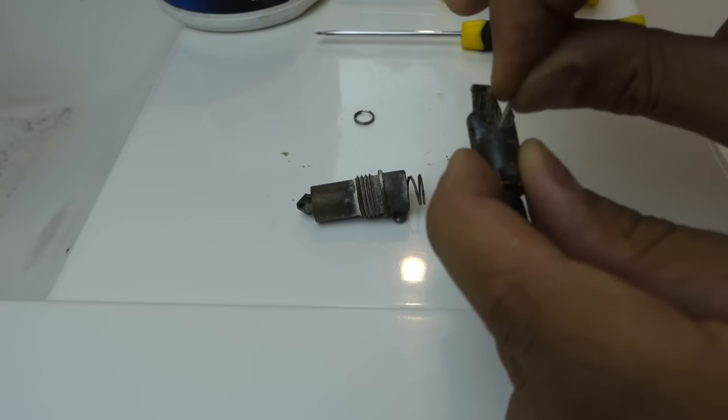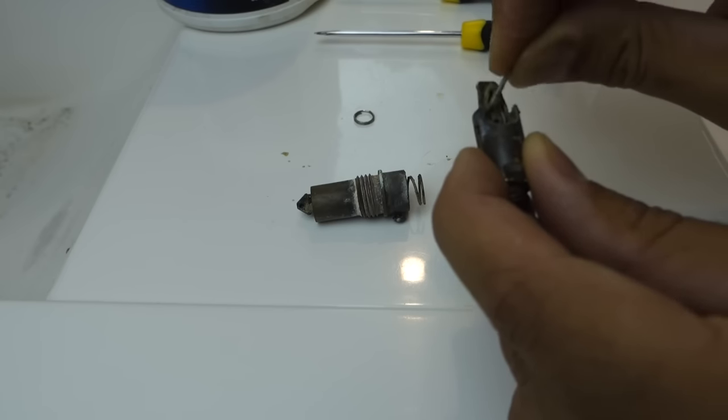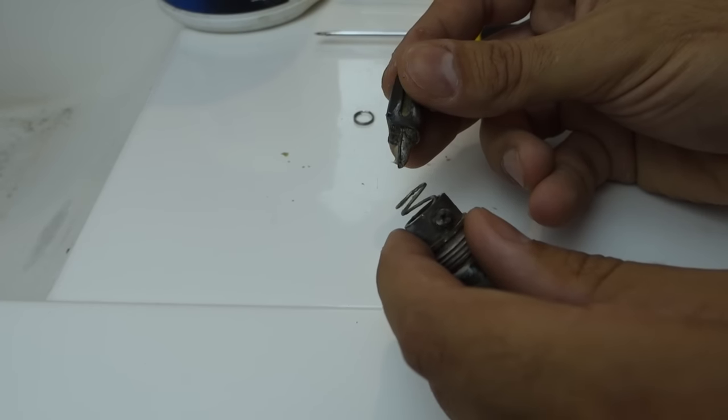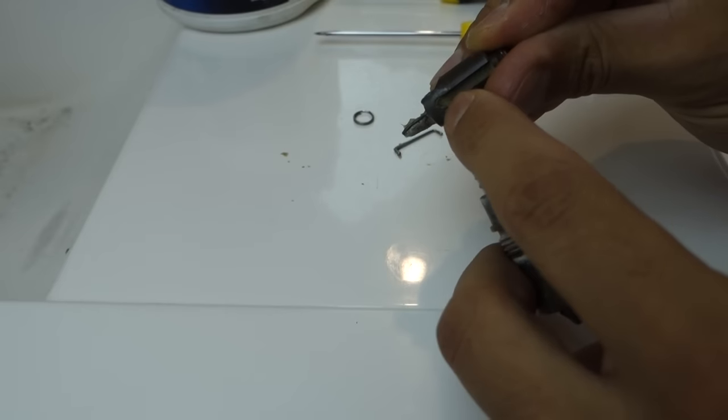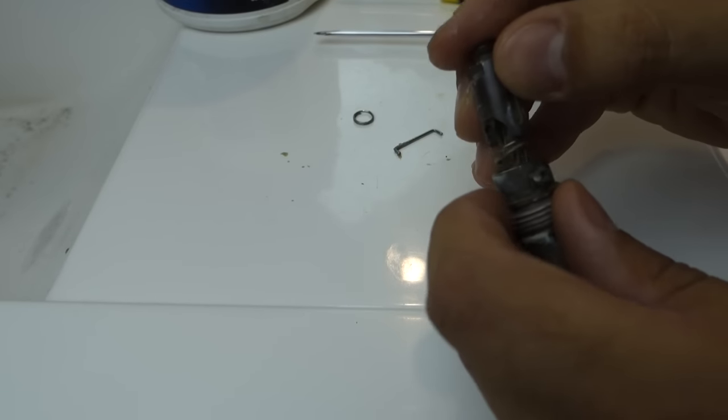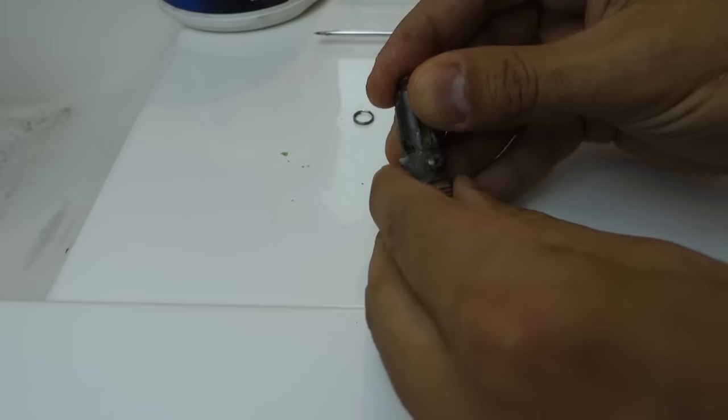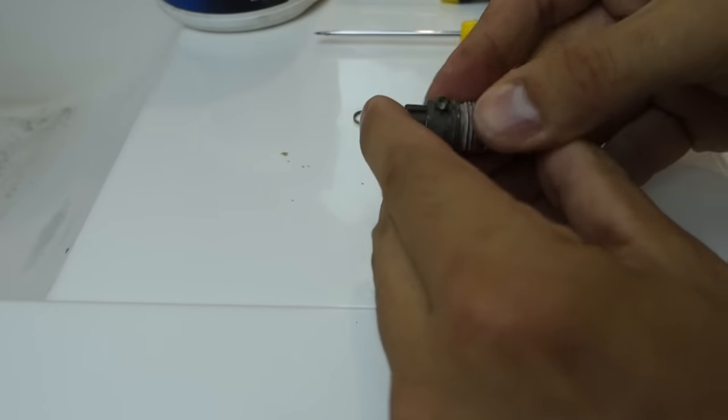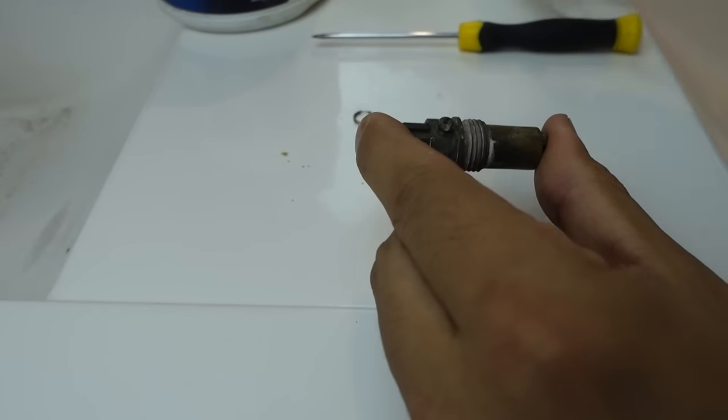So to put it back together, we're going to put everything back in reverse. We can see that little notch where the screw actually bites onto, so we're just going to make sure to line that up with the actual screw. Once we've got that in place, we can then hold it with your fingers like this and we want to tighten that screw back up.